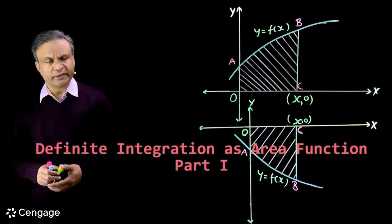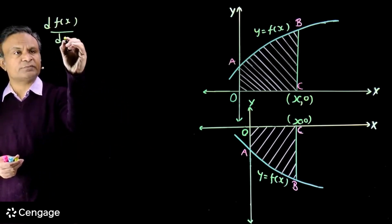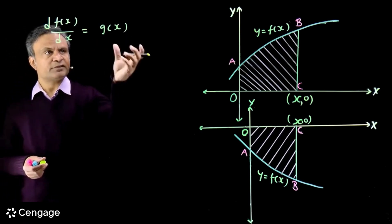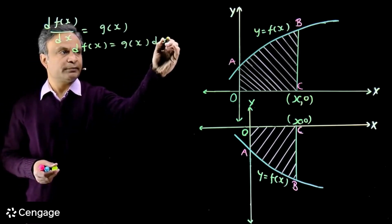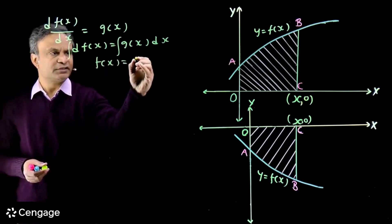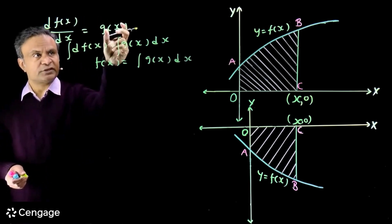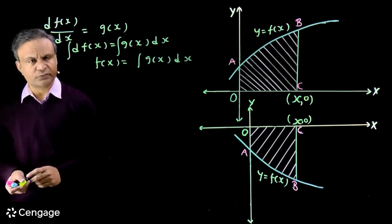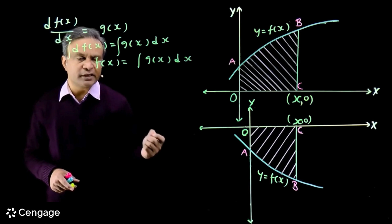Integration is the reverse process of differentiation. If we differentiate function f(x) with respect to x we get g(x), and if we integrate g(x) we get f(x) back. We have d(f(x)) = g(x) dx, and integrating both sides gives f(x) on the left and the integration of g(x) on the right. In this video we will see definite integration as an area function.